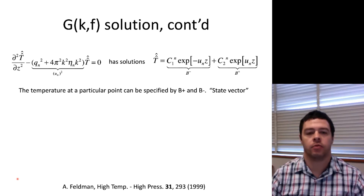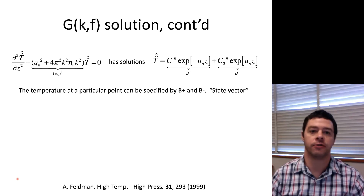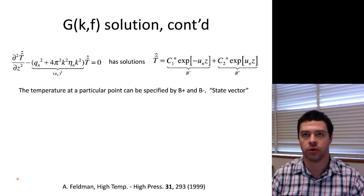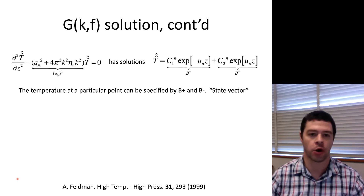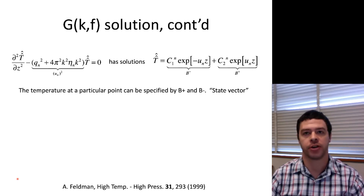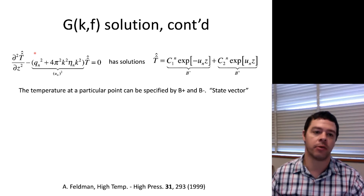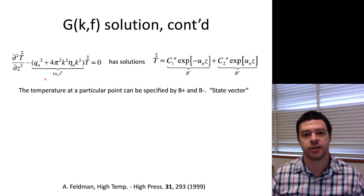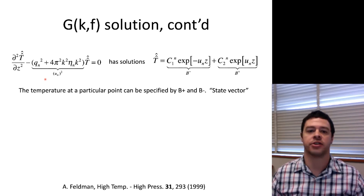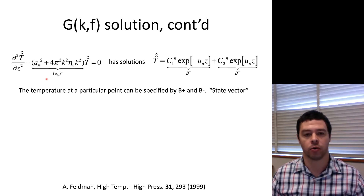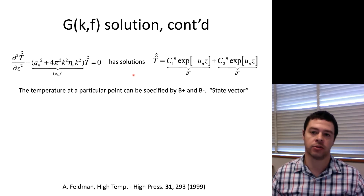We've recast the diffusion equation into the diffusion equation for the Fourier transform and the Hankel transform of temperature. When we did that, we got a much simplified looking diffusion equation—simplified enough that you can actually get an analytic solution. Because this is just a second order ordinary differential equation with a minus sign in front, I can just write the solution as a pair of exponentials.